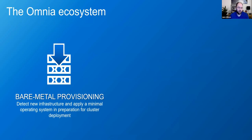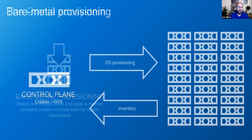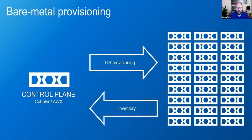Let me talk about the bare metal provisioning part — this is new in the latest version of Omnia. We just released Omnia 1.0 in March, and bare metal provisioning is new to 1.0. Before in our 0.X releases, we only had the intelligent deployment. Now we have this bare metal provisioning component that takes care of two pieces. First, we build a control plane system based on Cobbler and AWX, which is all bootstrapped by Omnia itself. That gives us a place from which we can deploy a minimal OS.